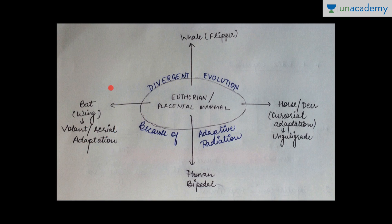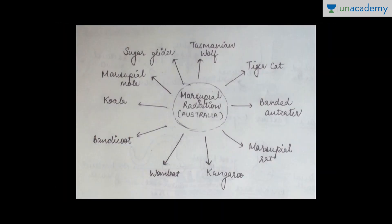Similarly, there is marsupial radiation found in Australia. Australian marsupials have radiated into Tasmanian wolf, tiger cat, banded anteater, marsupial rat, kangaroo, wombat, bandicoot, koala, marsupial mole, and sugar glider. This picture is also given in your NCERT textbook. That's all for this lesson — thanks for watching.